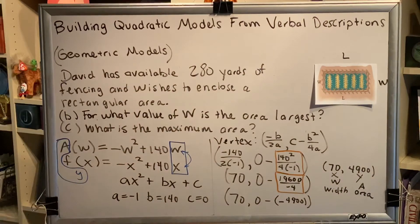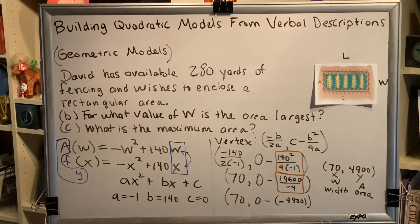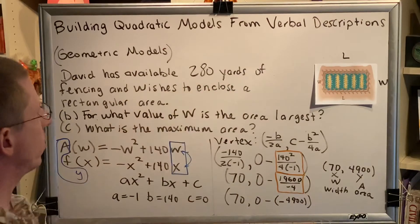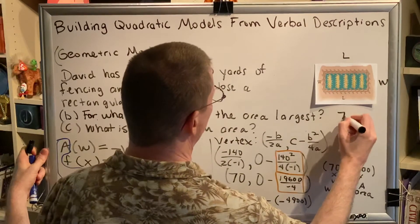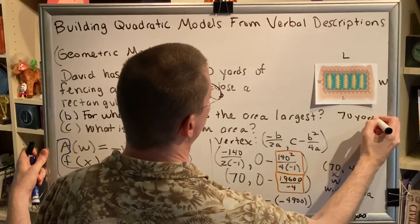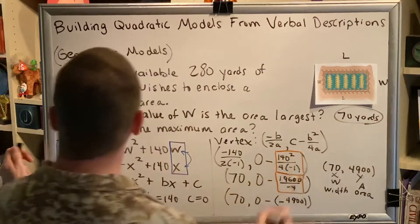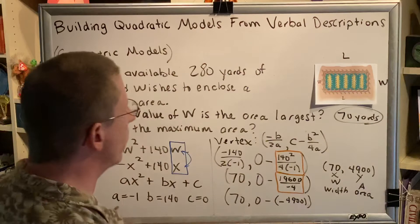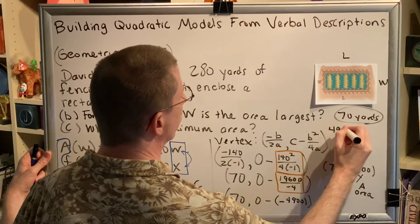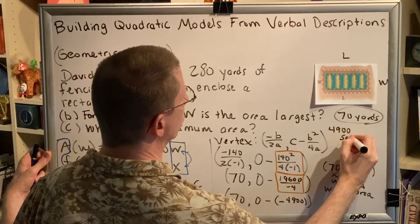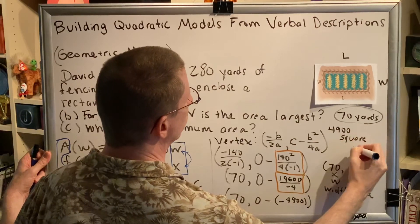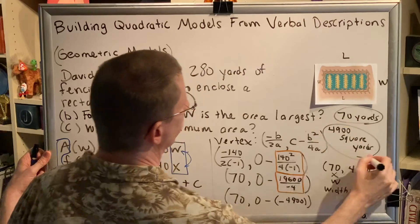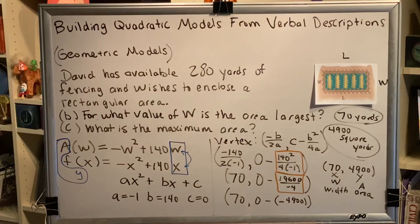Part B, for what value of W is the area largest? W is 70, 70 yards. And Part C, what is the maximum area? Area is 4,900 square yards. And with that, we have completed this problem.